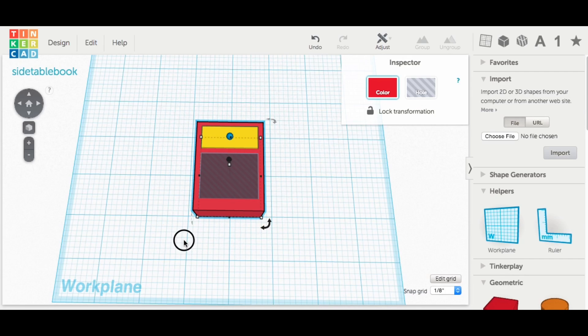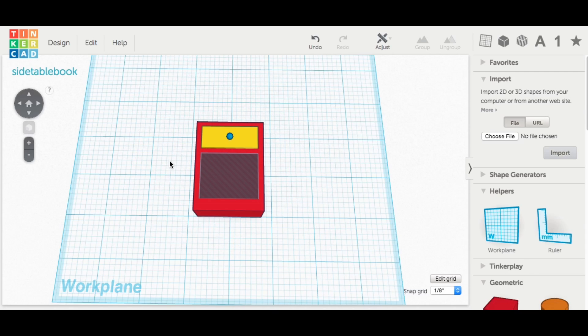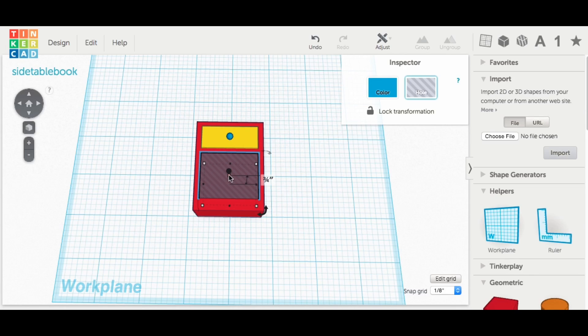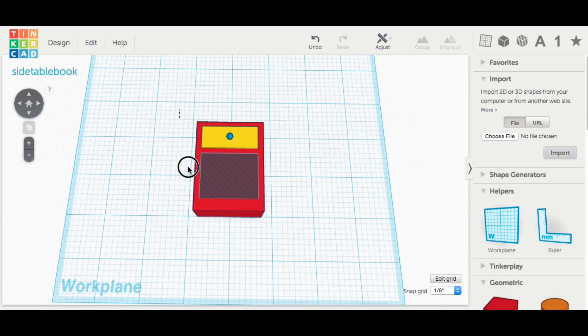It started out with just a single block and then added a second block on the front. This is a drawer front, but not a functional drawer, just for looks, and then a knob for that drawer. And then another block was inserted, only this time made into a hole. That's where the books will go.